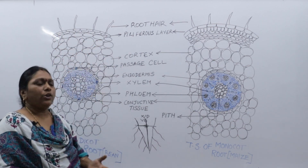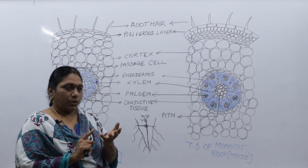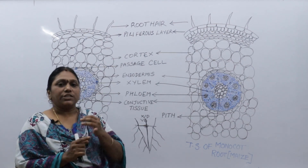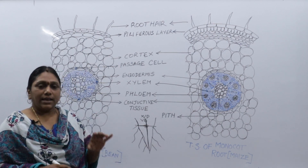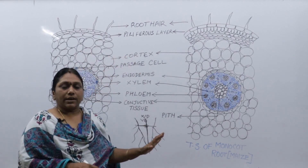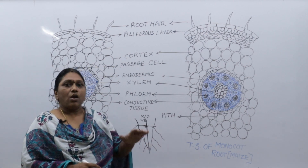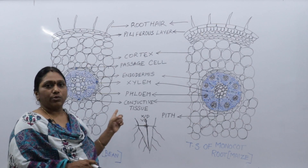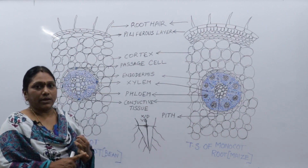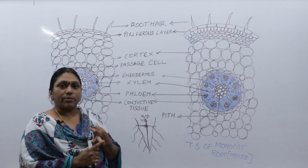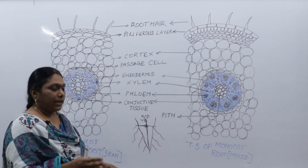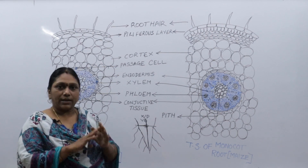In my last video I mentioned that the outer layer may have cuticle or stomata. Cuticle is a structure meant for checking evaporation of water, and stomata is meant for transpiration. In the root, cuticle is completely absent because there is no need to check evaporation. Stomata is also completely absent because stomata is present only in leaves for transpiration and gas exchange.